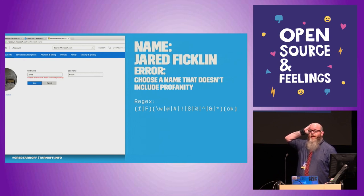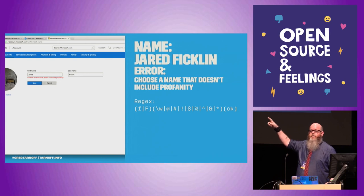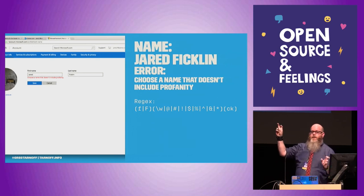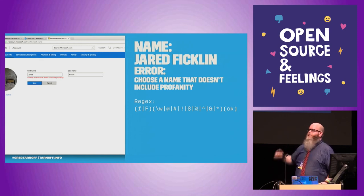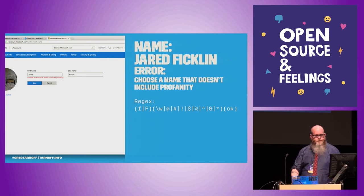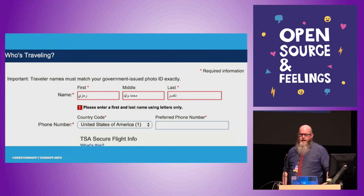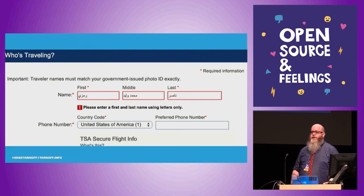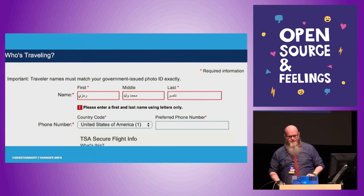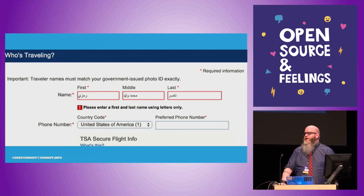I went and figured out what the regex was doing — they were basically looking for anyone going to use the word that sounds a lot like 'fick' but uses other letters, possibly throwing in a special character or alternative letter like 'frack' to try to get past the sensors. Obviously they went a little too far. Empathetic design lets your users use their native language to fill out forms. 'Please enter a first and last name using letters only' — tell that to Prince, and last time I checked, Arabic letters are still letters.